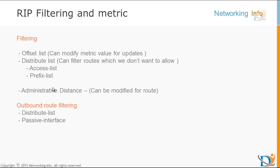Administrative distance is the trustworthiness rating for routing protocols, which is 120 for RIP. When an update comes in, you can modify the metric value. If any update comes and you don't want it in your routing database, you can modify the AD — for example, set it to 255 so your router treats the route as unreachable. Administrative distance is also a kind of filtering method. We also have passive interface, which does not advertise any routing updates, so we can filter out updates using it.